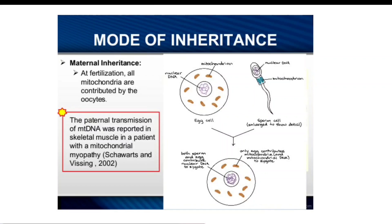There are some cases where the sperm has transmitted mitochondria — paternal mitochondrial transmission was reported in skeletal muscle in a patient with mitochondrial myopathy. Myopathy is a general term referring to any disease that affects the muscles controlling voluntary movement. It is caused by a dysfunction of the muscle fiber. This occurs when both maternal and paternal mitochondria enter the muscle cell.